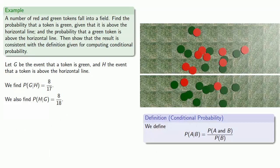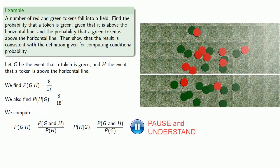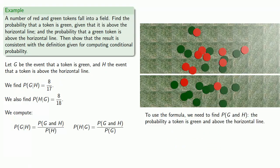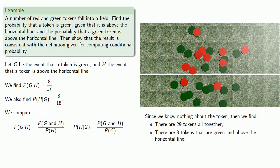We'll pull in our formula for calculating conditional probability to find the probability of G given H: the probability of G and H divided by the probability of H. Likewise, the probability of H given G is the probability of G and H over the probability of G. To use the formula, we need to find the probability of G and H — the probability that a token is green and above the horizontal line. It's important to recognize that this is not a conditional probability, so we know nothing about the token. We find there are 29 tokens altogether and 8 tokens that are green and above the horizontal line.